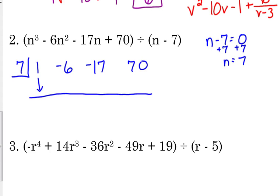First one comes down, the one comes down. Then we start the process of multiplying. 1 times 7 is 7. Add. Negative 6 plus 7 is 1. Multiply. 1 times 7 is 7. Add. Negative 17 plus 7 is negative 10. Multiply. Negative 10 times 7 is negative 70. Add. We get zero.